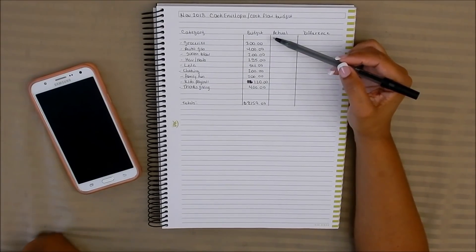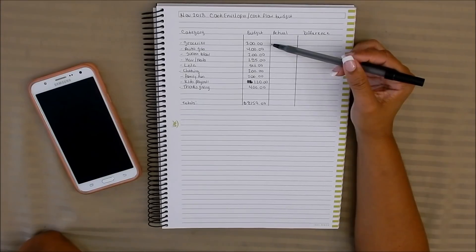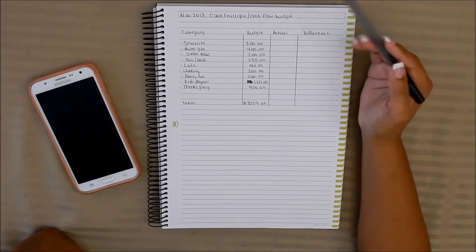For groceries this month I am budgeting out $300. That should definitely cover any monthly groceries that we need. Of course I have a stock freezer as well as a pantry, but with Thanksgiving coming up that should cover anything special that I may decide to do.